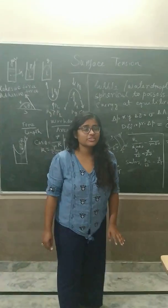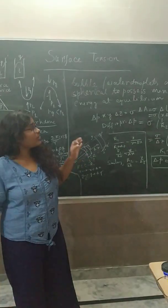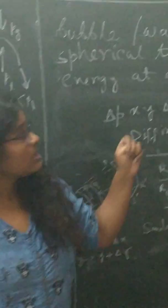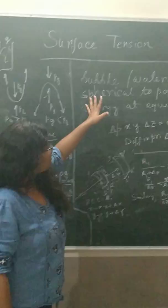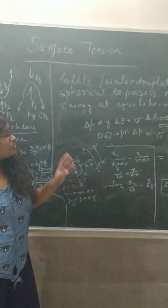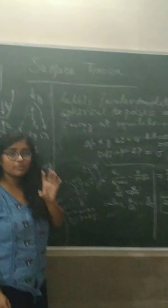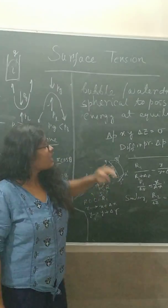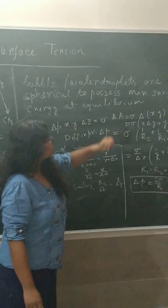Last time I asked you some questions related to surface tension — what is surface tension, and why are the shapes of bubbles or water droplets always spherical in equilibrium? The answer is that bubbles and water droplets are spherical to possess minimum surface energy at equilibrium. Whenever they are in an equilibrium state, they tend toward minimum energy, and they possess minimum surface energy when their shape is spherical.